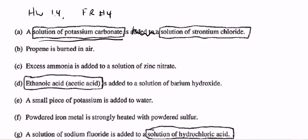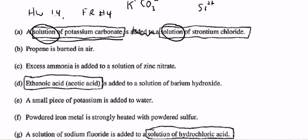So all I want you to do in this first one is write the formula for a solution of potassium carbonate. There is the water word. So potassium is K⁺, CO₃ is 2⁻ — we leave it in their ion form. A solution of strontium chloride, there's our water word. So we just write the ions and leave them in their ion form.